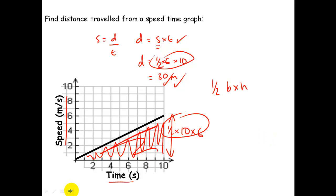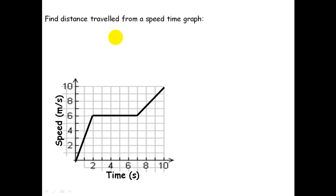Let's look at a more complicated example — about as complicated as it gets in IGCSE. Here's another speed-time graph broken up into sections. Always read the axes when you look at a graph. Telling the story: at 0 seconds the speed is 0; it then increases to 2, 4, 6 metres per second — so section A to B is acceleration. From point B onwards the speed stays at 6 metres per second — that's constant speed. From C to D the speed goes from 6 to 8 to 10 metres per second — more acceleration.